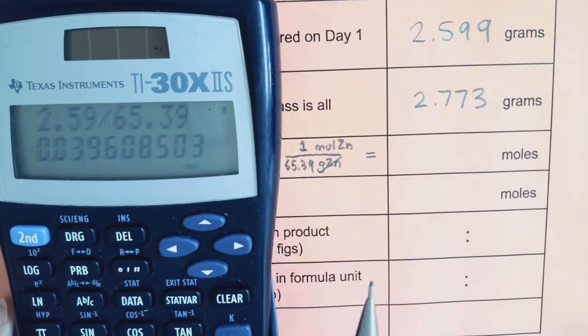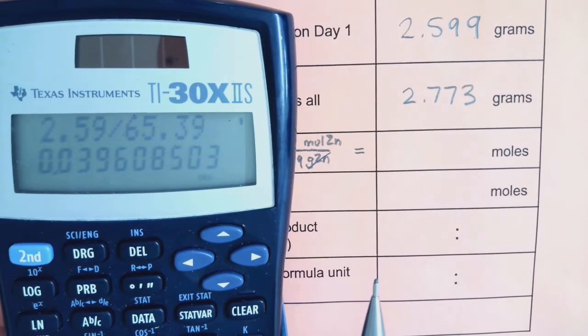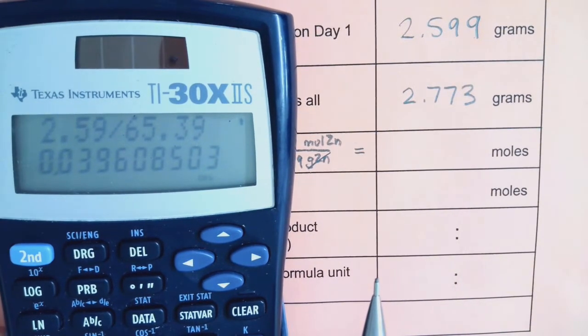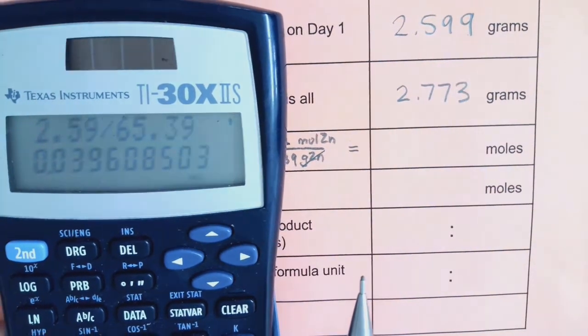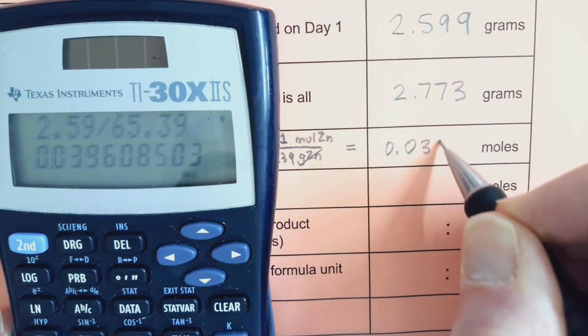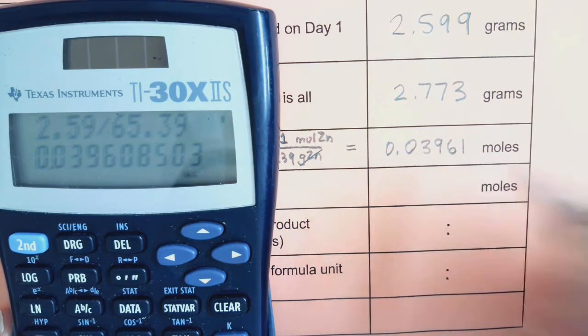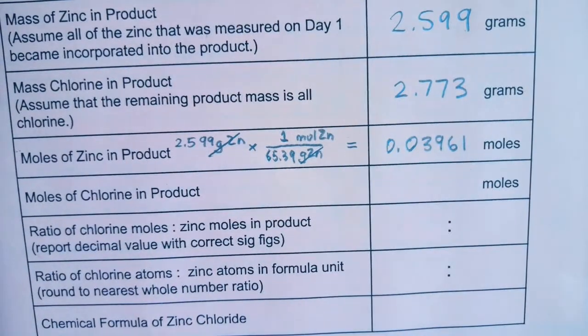I need to remember that leading zeros are not significant. So I'm going to keep 0.03961. I'm going to round up that last digit. So 0.03961 moles of zinc. That in essence is counting up how many atoms of zinc I have.